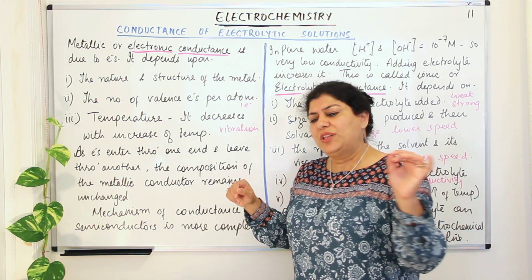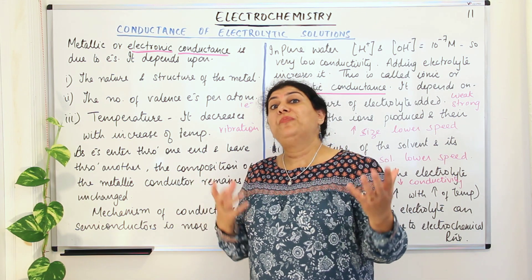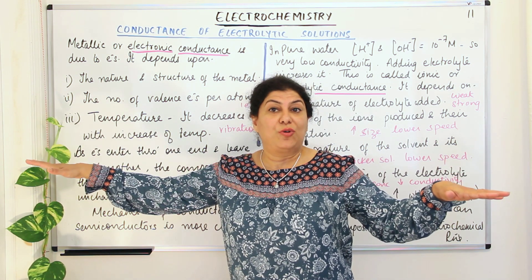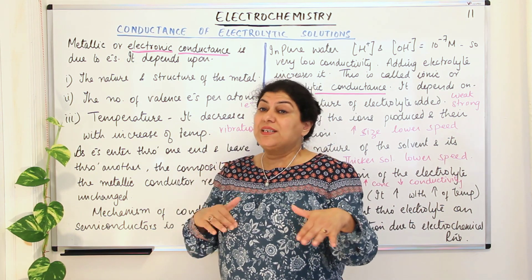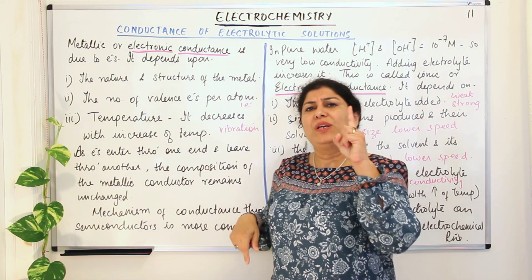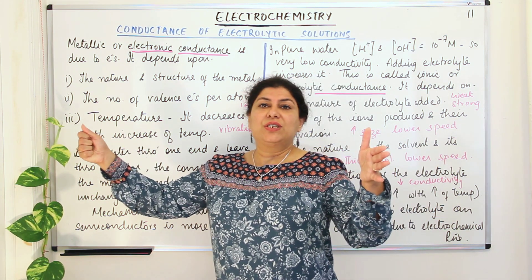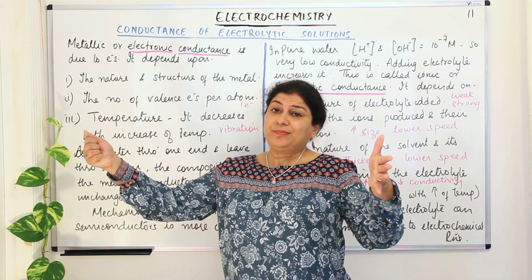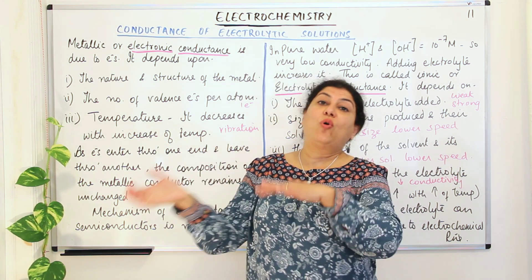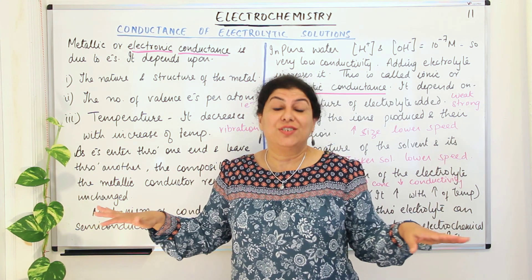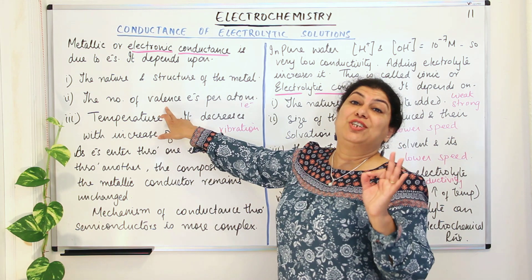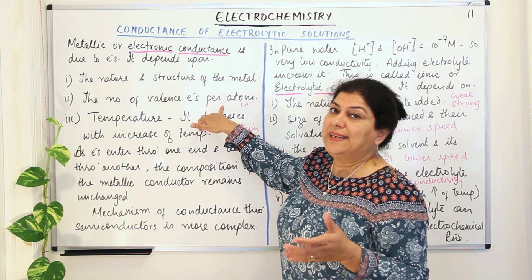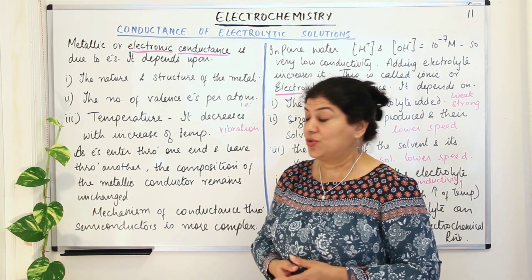In the case of metals which have more than one valence electron, it is like having more billiard balls — the electricity which comes, that energy gets distributed between more electrons. So electronic conduction would be better when the metallic atom has only one valence electron. The electrons which enter the circuit hit that one electron and all of the energy is transferred — no fragmentation of energy. Therefore, metallic atoms with one valence electron are usually found to be better conductors of electricity.